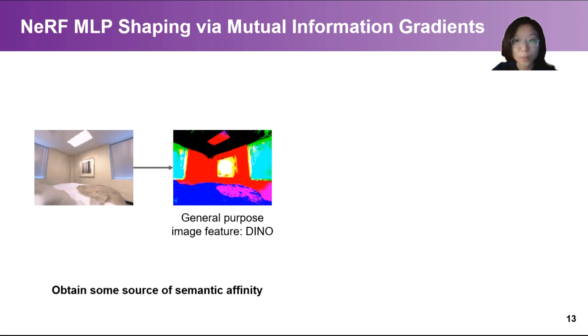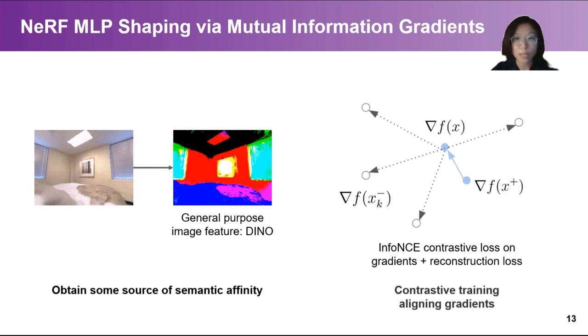For our experiments, we use DINO features. DINO is a general-purpose self-supervised image feature extracted from pre-trained models. Then we apply contrastive training to align gradients. We randomly sample pixels from all the training views, extract DINO features, and select positive and negative pairs based on the similarity of DINO features.